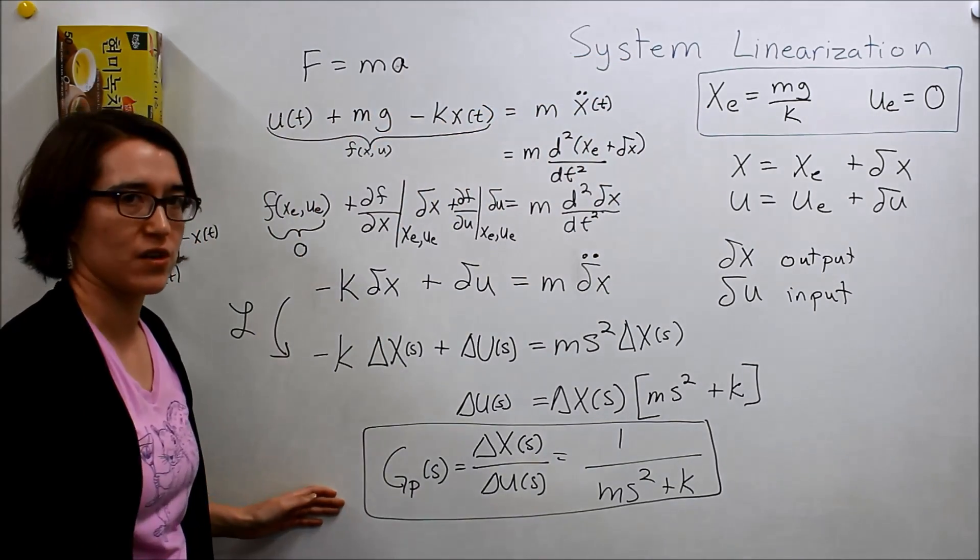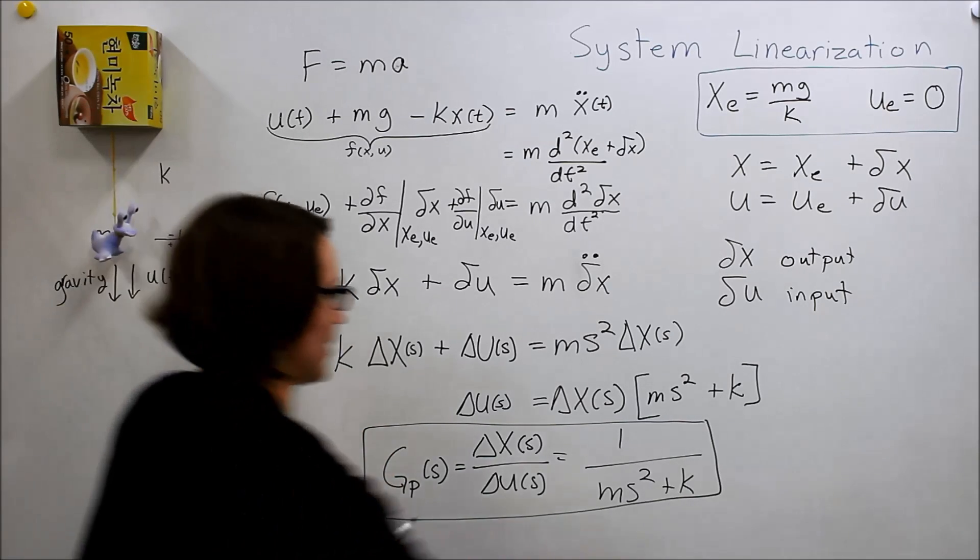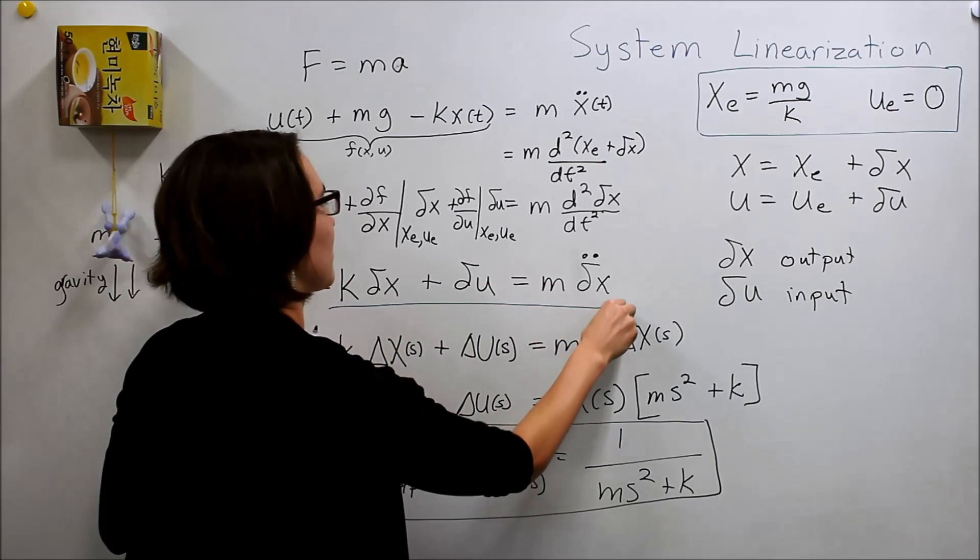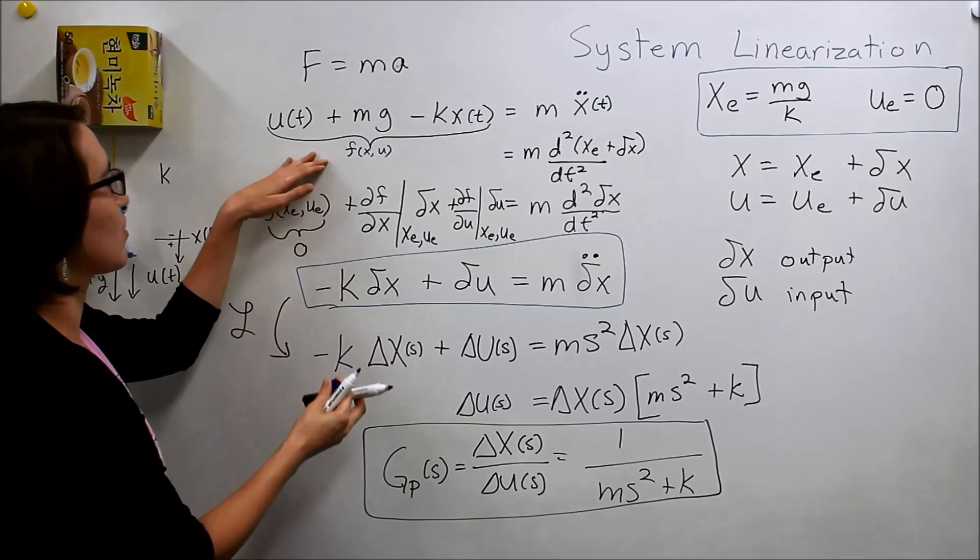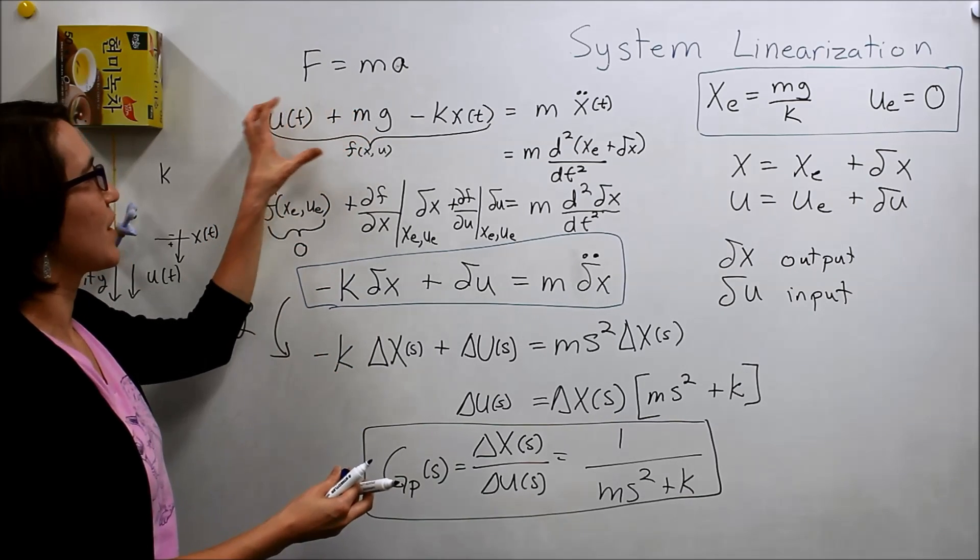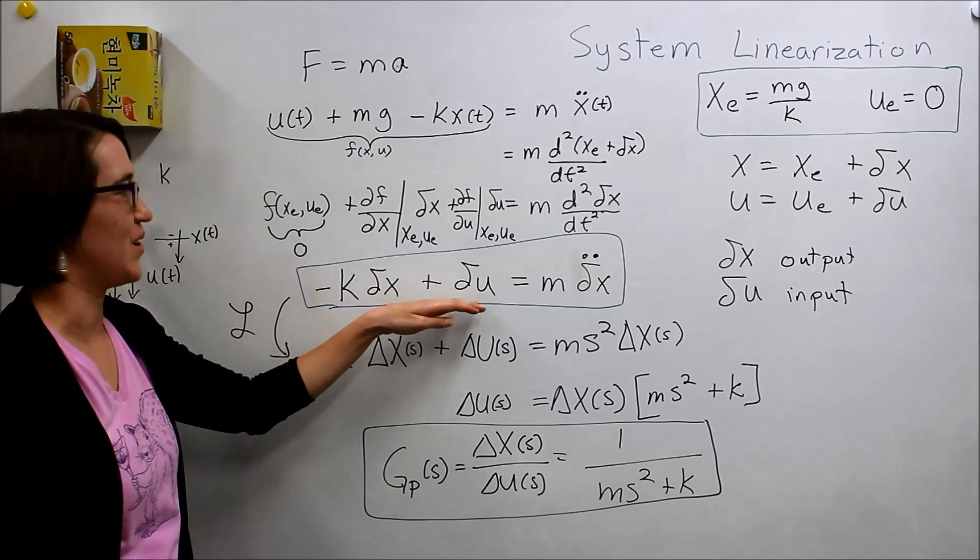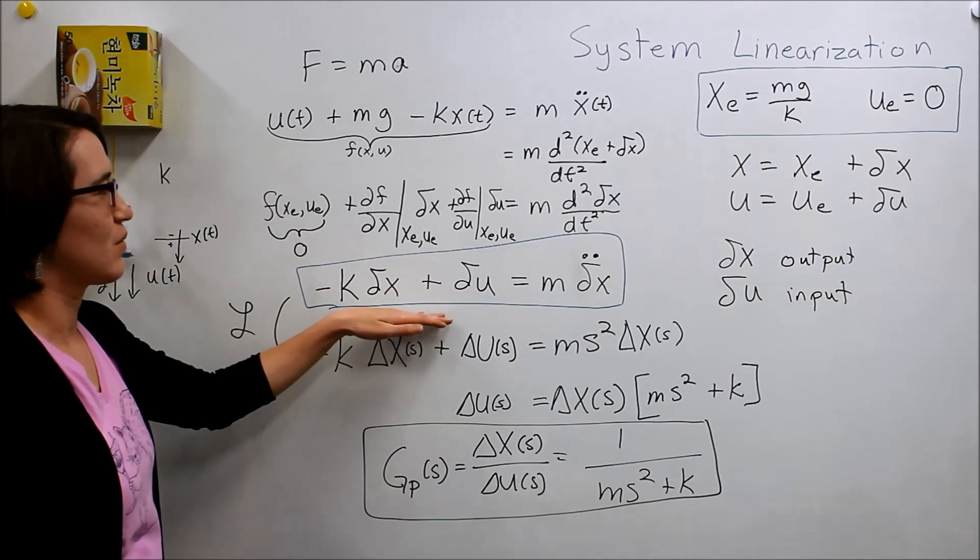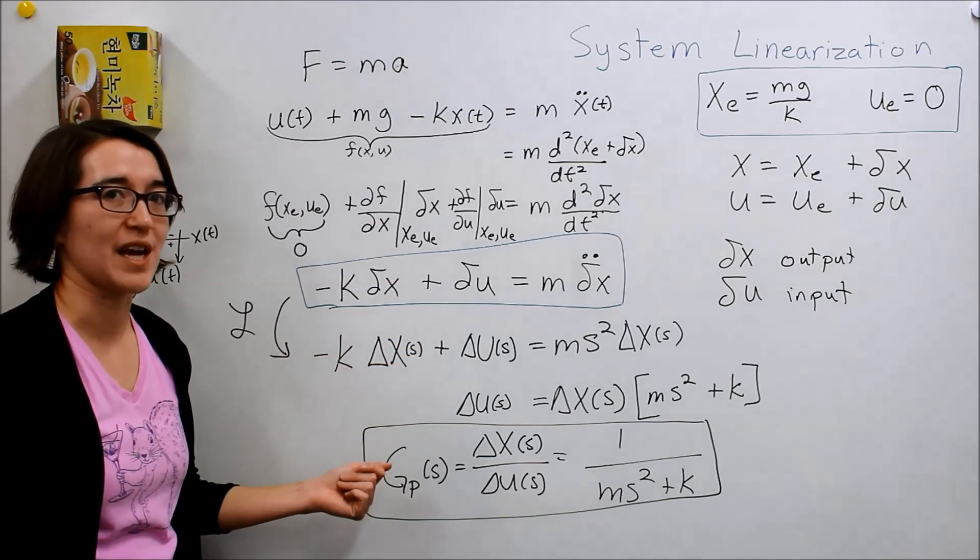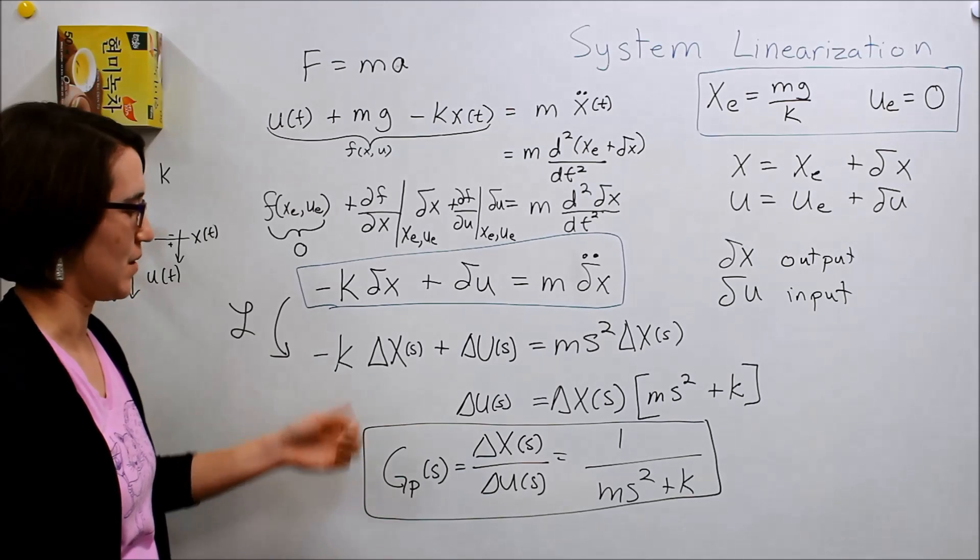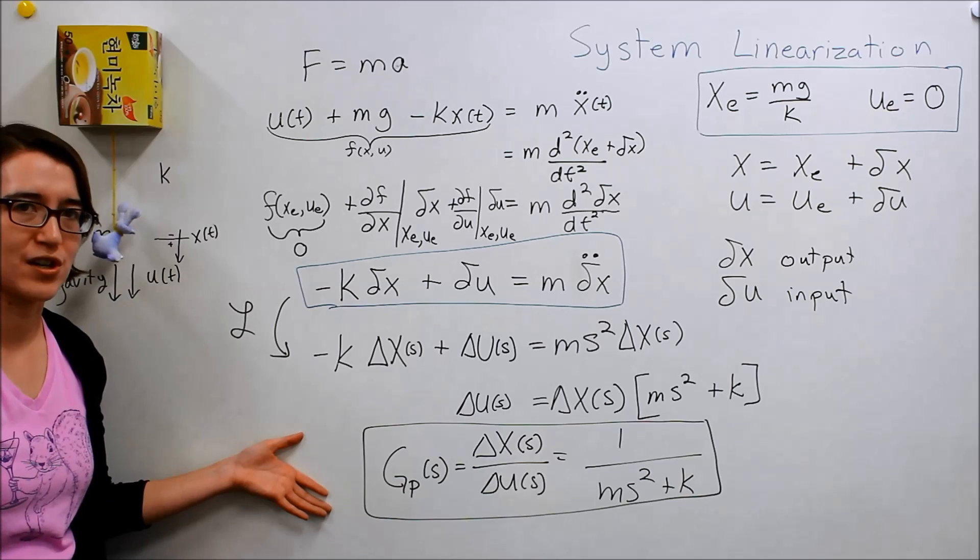So, there we have it. We have linearized this system around its equilibrium point and found its transfer function. And this was our linearized expression. And this one was a relatively easy one. Because if you compare this back to its original one, it's really, the same signals turn into small signals. So, the delta x or delta u. And we just get rid of the mg. So, this was a relatively straightforward one. But you would use the same process for more complicated systems. So, this is how you linearize a nonlinear system and find its transfer function.